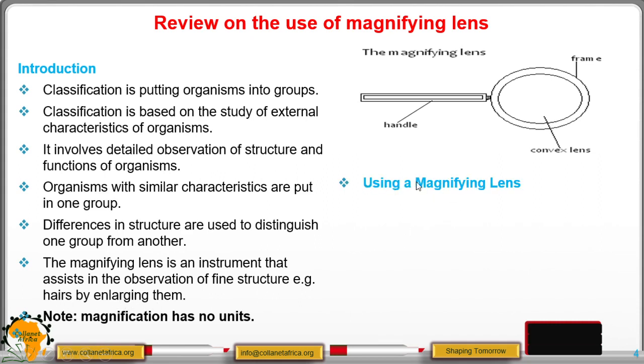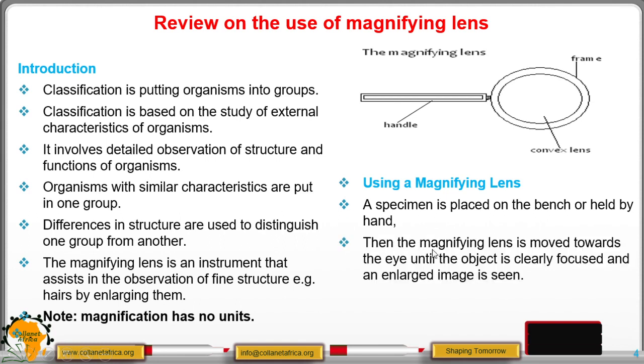Now how do we use a magnifying lens? A specimen is placed on the table or a bench or you hold it on your hand. Then you move the magnifying lens towards your eyes until the object is clearly focused and an enlarged image is seen.